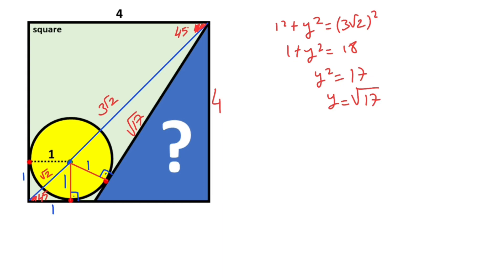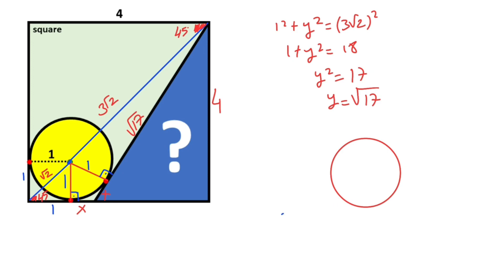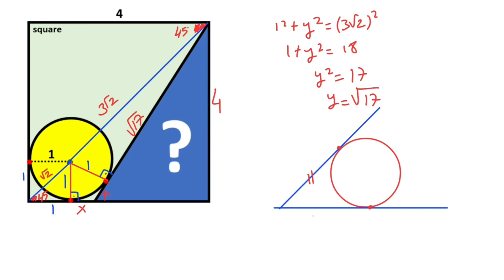After that, this length and this length are equal. If here is x, that means this part must also equal x. This is because if you have a circle and two tangent lines, the tangent lengths from an external point to the circle are equal.